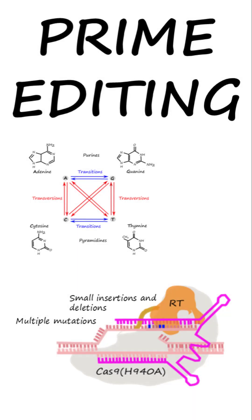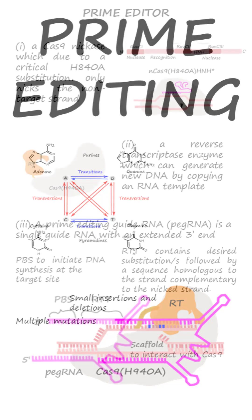Prime editing, one of the CRISPR-based gene modification methods, can introduce a range of edits, such as all 12 base changes and small insertions and deletions. It can also address multiple mutations close to one another.